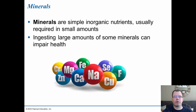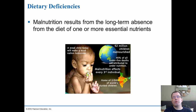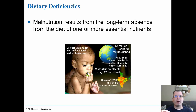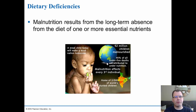Dietary deficiencies occur when we don't get essential nutrients, leading to malnourishment — a long-term absence of one or more essential nutrients from the diet. We see this especially in regions experiencing famine and drought, particularly in India and Africa. It's estimated that every third individual is malnourished in the world today, which is troubling given our complex, cosmopolitan world. Even in the United States, hunger remains a major issue, with children going to bed hungry every night.